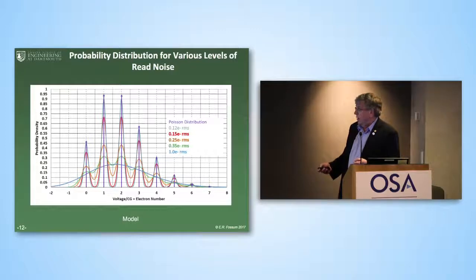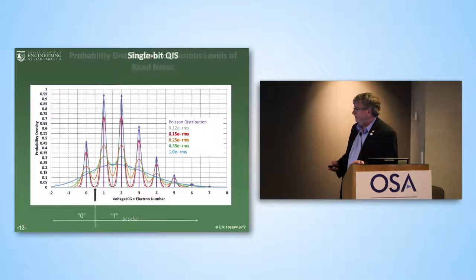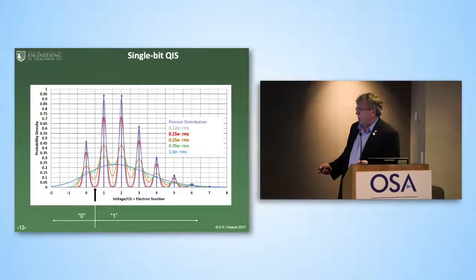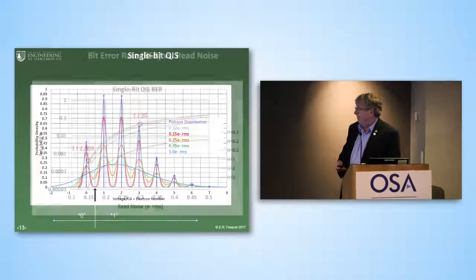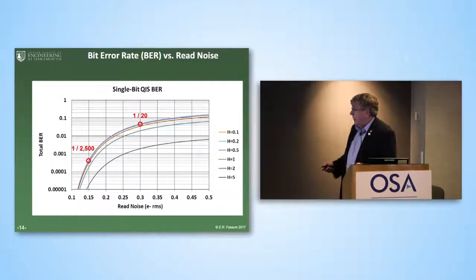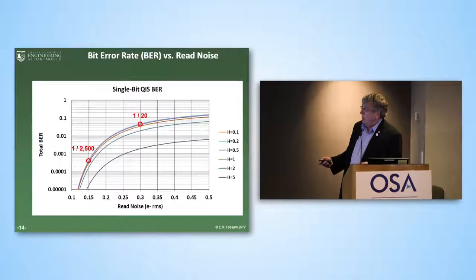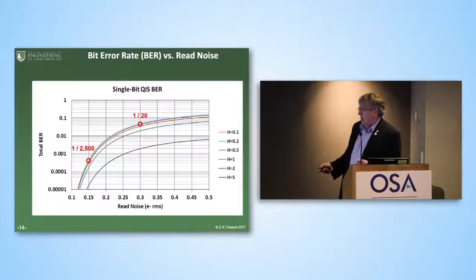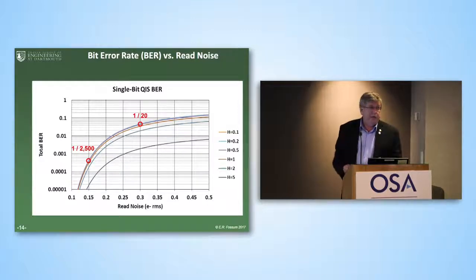By the time you get to one electron read noise — which you might think is pretty good — you completely lose the quantization of electrons. In the single-bit quantum image sensor, we set a threshold: below this level we quantize as zero, above this as one. Depending on the noise, you get a bit error rate. At 0.3 electrons rms read noise, about 1 in 20 bits is incorrect. If you drop the noise to 0.15 electrons rms, you get two orders of magnitude improvement in the bit error rate. So even 0.3 electrons rms is probably not good enough for photon counting applications — we need to drive down to the 0.15 electrons rms range.